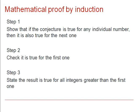This translates to three steps within mathematical proof by induction. For the first step, we need to show that if a conjecture is true for any individual number, then it is also true for the next one. Step two, check it is true for the first one. And then step three, we can state the result is true for all integers greater than the first one.